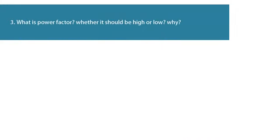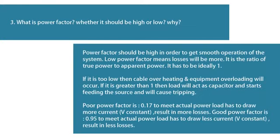Question 3: What is power factor? Whether it should be high or low? Power factor should be high in order to get smooth operation of the system. Low power factor means losses will be more. It is the ratio of true power to apparent power, and it has to be ideally 1. If it is too low, cable overheating and equipment overloading will occur. If it is greater than 1, then the load will act as a capacitor and starts feeding the source, causing tripping. Poor power factor of 0.17 means the load has to draw more current, resulting in more losses. Good power factor of 0.95 means the load has to draw less current, resulting in less losses.